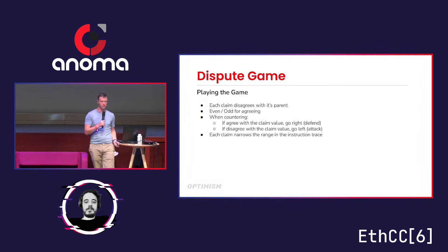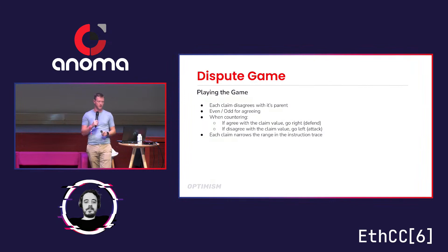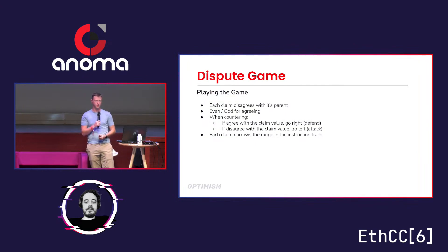Playing the game, we have a set of rules for the bisection. Every claim disagrees with its parent, so all even levels agree with each other and all odd levels agree with each other. We either go left in the trace (attacking) or right in the trace (defending), based on whether we agree with the claim value. We're trying to bisect to the instruction point where the divergence in the traces happened — where is the first instruction where those two traces diverged? Each claim does this narrowing.